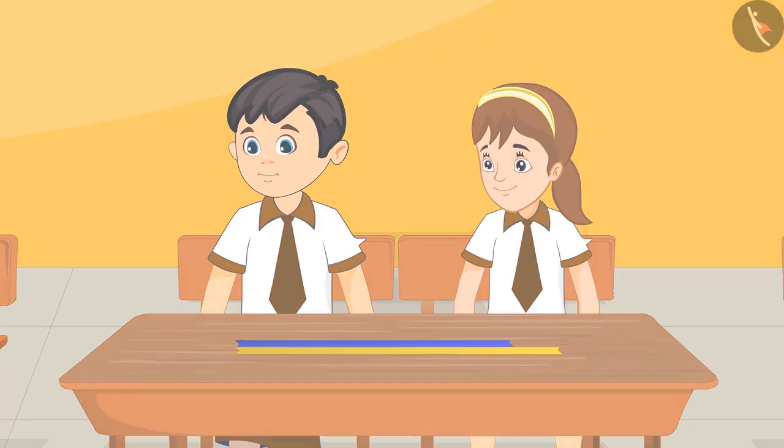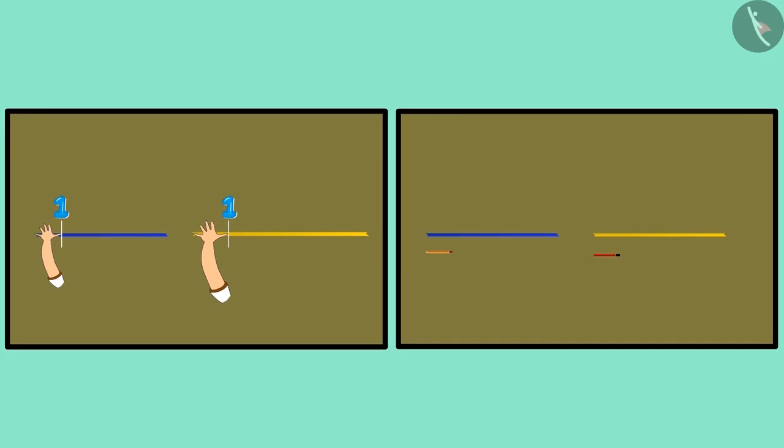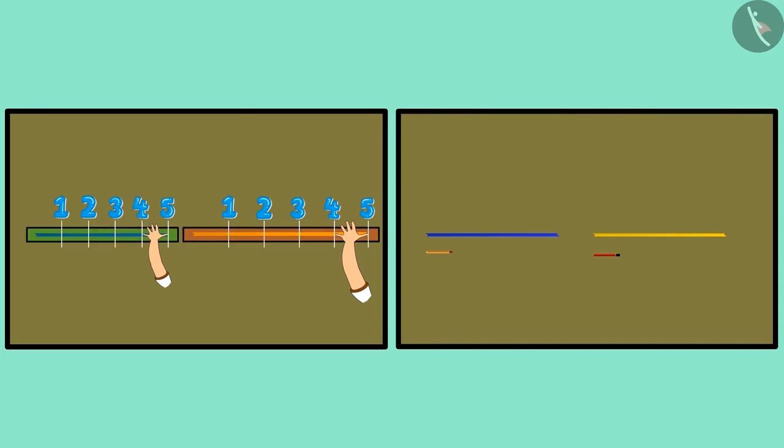Oh, now I understood. So did you see children? All took a ribbon with a length of 5 handspan, but they all had different sized hands. And hence the length of the ribbons were also different. So we should measure with objects which are of the same length everywhere.